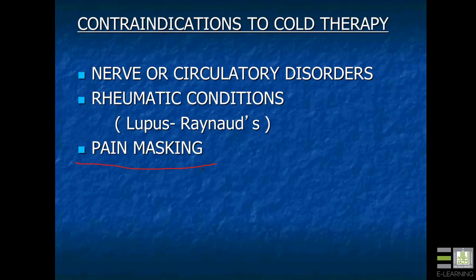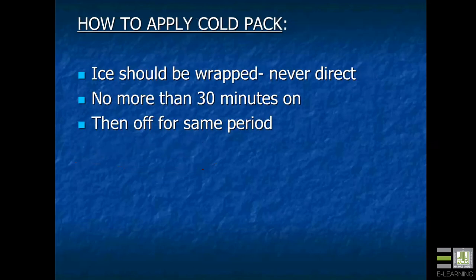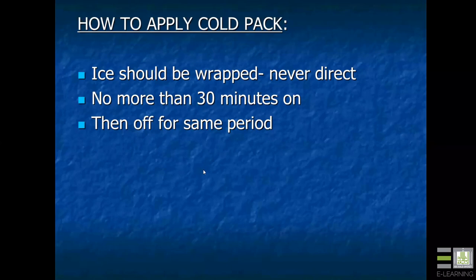Cold therapy is contraindicated in certain nerve or circulatory disorders and in rheumatic conditions such as lupus or Raynaud's phenomenon. An ice pack should always be wrapped — never use ice directly. No more than 30 minutes on, then off for the same period. This initial recommendation applies for acute types of problems.